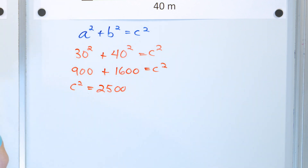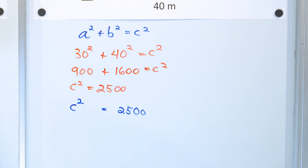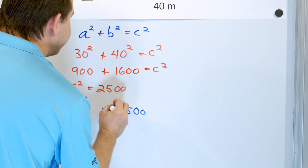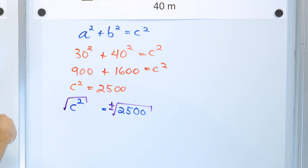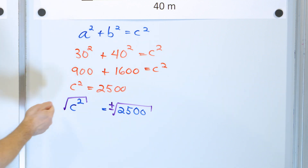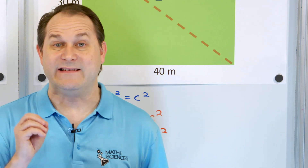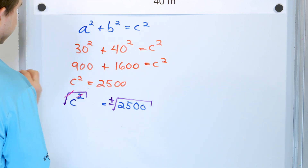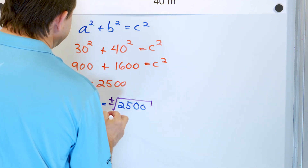We want to solve for c, the length of the longest side. To get rid of the square, we do the opposite — the square root — and we apply it to both sides. When we apply our own square root, we have to add a plus or minus, because c² = 2,500 has two solutions: a positive and a negative number both squared give 2,500. But in real life, we discard the negative answer since we can't have a negative fence length. So c = ±√2,500 = ±50.